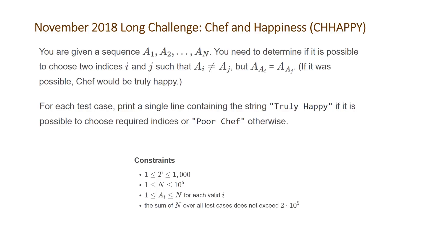The problem states you are given a sequence a1 to an and you need to determine if it is possible to choose two indices i and j such that ai does not equal aj but a of ai equals a of aj. If it was possible, Chef would be truly happy.